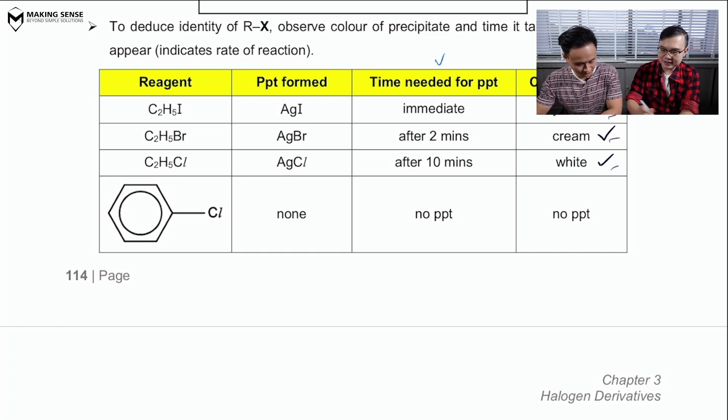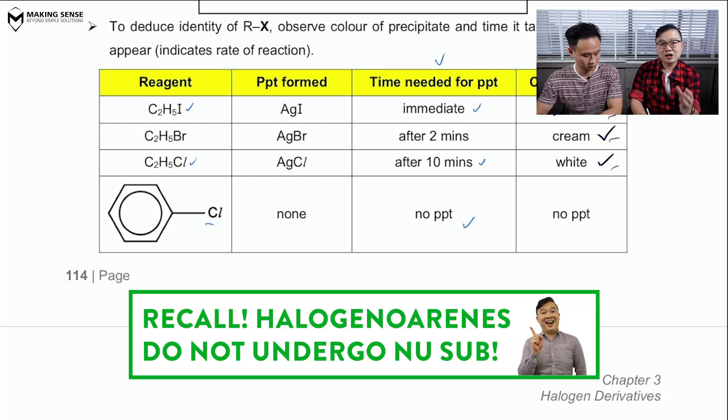Now, under this particular column over here, there's this additional observation. It tells me the speed of the reaction. The one with iodine is going to be the fastest, all the way down to chlorine is going to be the slowest, and of course, the one that is chlorobenzene will definitely not get any precipitate. Oh, wow. So, what is the reason why there is a difference in the speed?